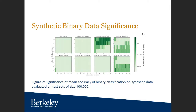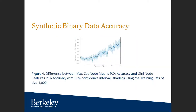Comparing Gini node features PCA versus Max Cut node means PCA, we see a specific pattern: as the dimension of the data set increases, the node means feature representation consistently moves towards outperforming, and outperforms much more significantly than it was ever outperformed by the node features representation.